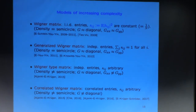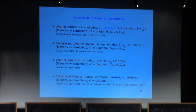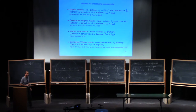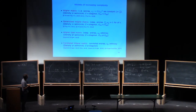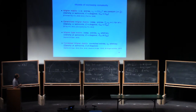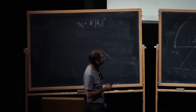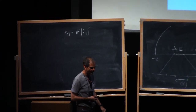The next class is Wigner-type matrices, which still have independent entries, but now we drop any condition on the variances — the variance matrix S is an arbitrary n-by-n matrix. In that case the density is no longer the semicircle; it heavily depends on the matrix S and is determined by S alone. The resolvent G is still diagonal, but the diagonal matrix elements are no longer the same in general, so the matrix starts having non-trivial structure.